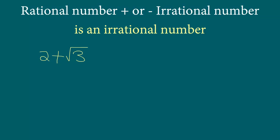Let's say this number is a rational number. Then we can write this in the form a/b, where both a and b are integers, they don't have any common factor, and b is not equal to 0.